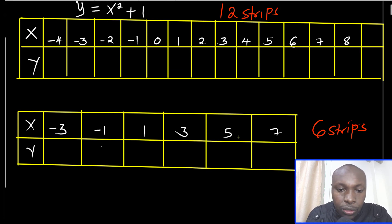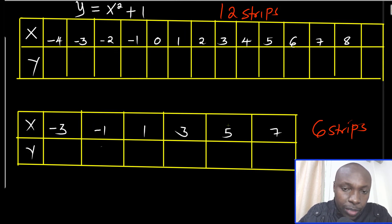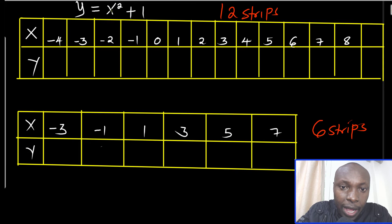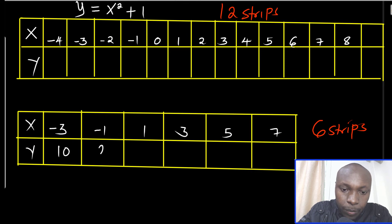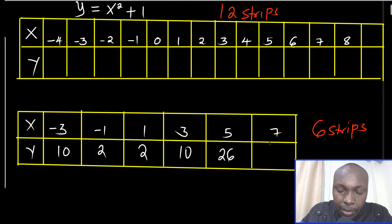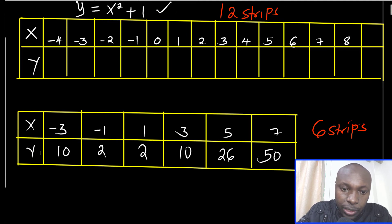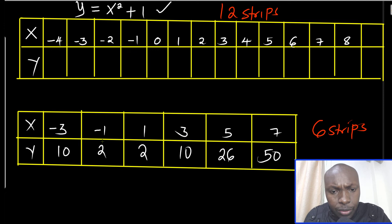These are the mid-ordinate x-values I extracted into the table. Using the function y = x² + 1, we fill in the y-values: when x = -3, y = (-3)² + 1 = 10; when x = -1, y = 1² + 1 = 2; when x = 1, y = 1² + 1 = 2; when x = 3, y = 3² + 1 = 10; when x = 5, y = 5² + 1 = 26; when x = 7, y = 7² + 1 = 50.